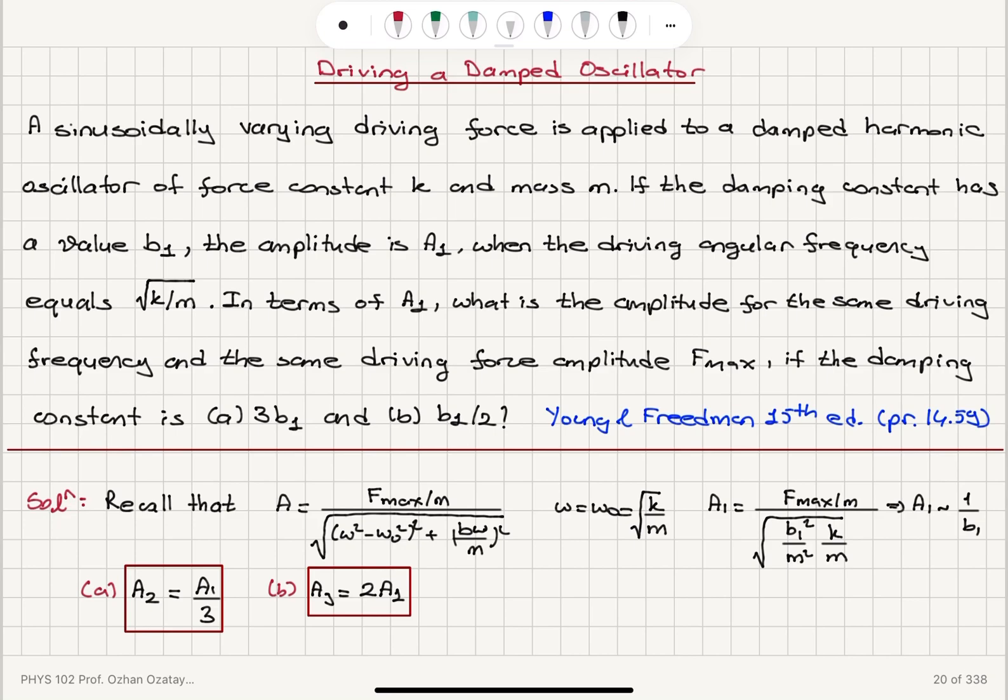All right, so we're talking about driving a damped oscillator. We recall that the amplitude of the damped oscillator, which is driven by angular frequency omega sinusoidal force, is f_max over m square root omega squared minus omega zero squared squared, where omega zero is the natural frequency of oscillation square root k over m, plus b omega over m parentheses squared, b is our damping constant. And when omega equals omega zero, we can see that the amplitude varies as 1 over the damping constant for the same angular frequency f_max.